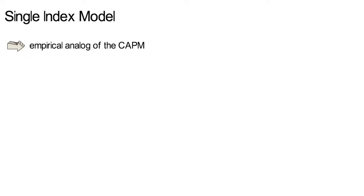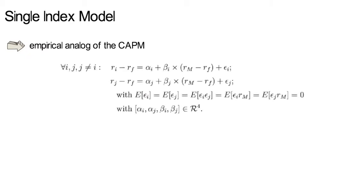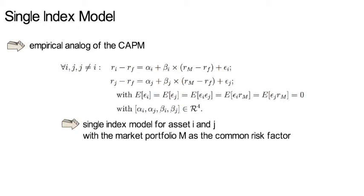It assumes that returns of asset i and asset j co-move because both assets have exposure to the same underlying risk factor, which here would be the market return. Using equations we could write that idea as follows. Here we display a single index model for asset i and j with the market portfolio M being the common risk factor.